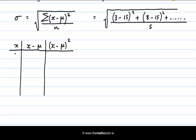So our x values were 3, 8, 37, 20 and 7. Now remember that μ is equal to 15, that's our mean.